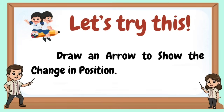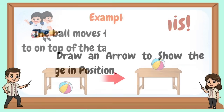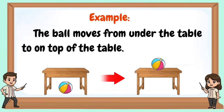Let's try this. Draw an arrow to show the change in position. Example: the ball moves from under the table to on top of the table.